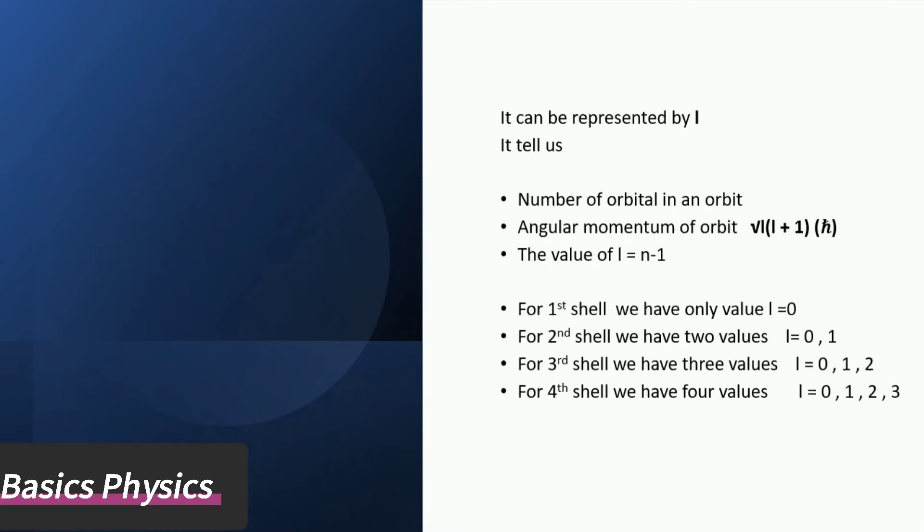For the second shell we have two values l equals 0, 1, which has two orbitals s and p. For the third shell we have three values l equals 0, 1, 2, which has s orbital, p orbital, and d orbital.